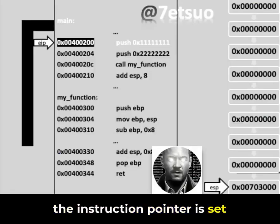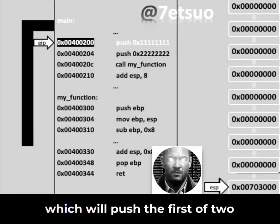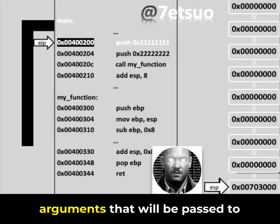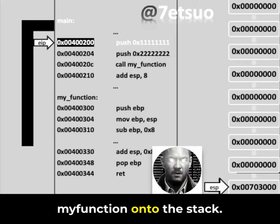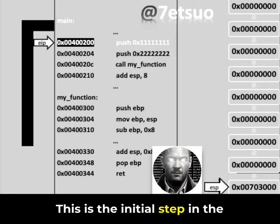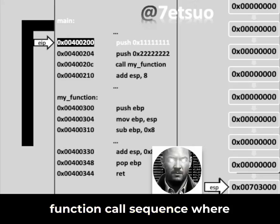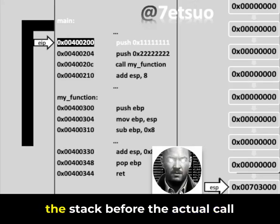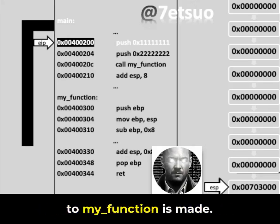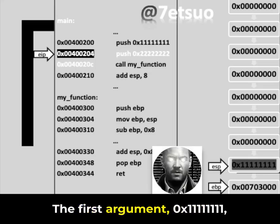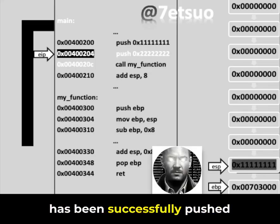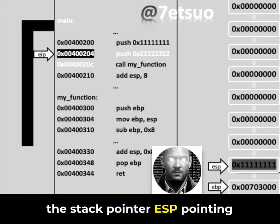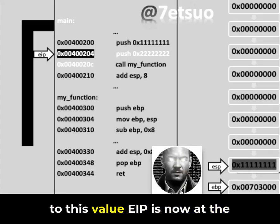The instruction pointer is set to execute the push operation, which will push the first of two arguments onto the stack before the actual call to my function is made. The first argument, 0x11111111, has been successfully pushed onto the stack, as indicated by the stack pointer ESP pointing to this value.